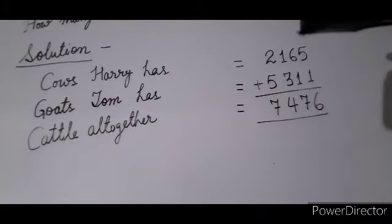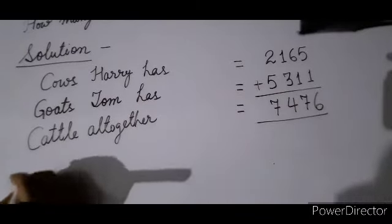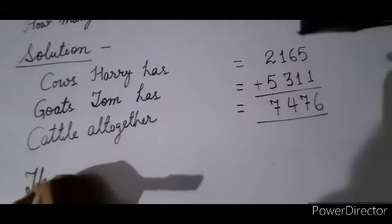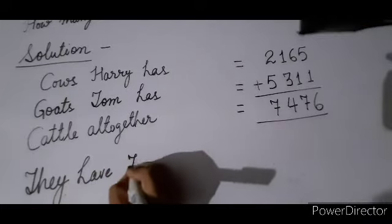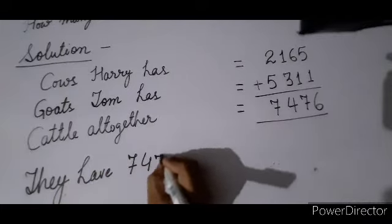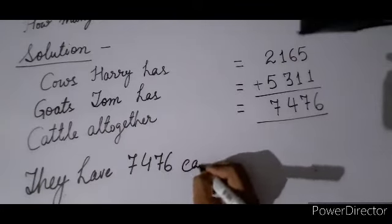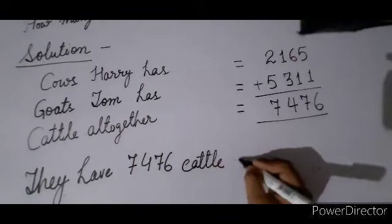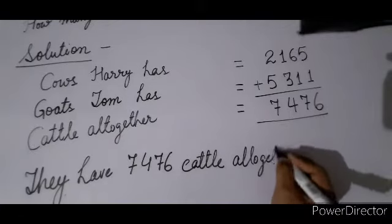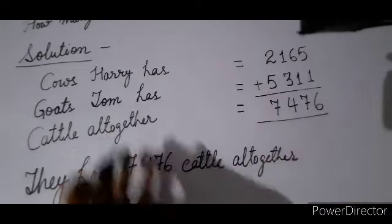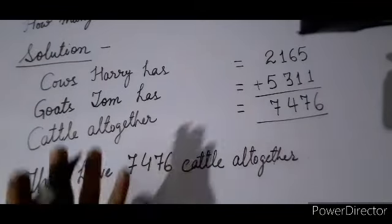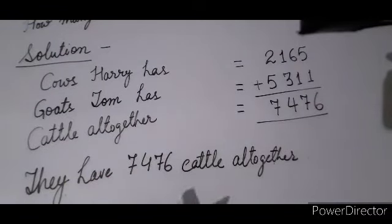Write the answer: 'They have 7476 cattle all together.' The statements you write come from the question itself — pick the lines from the question and form your statements. This is the solution for question A. Do it in your notebook.